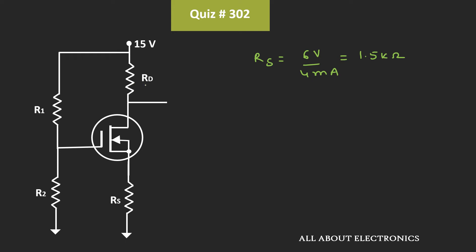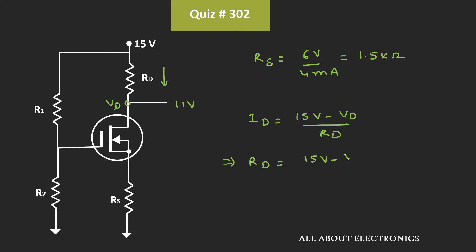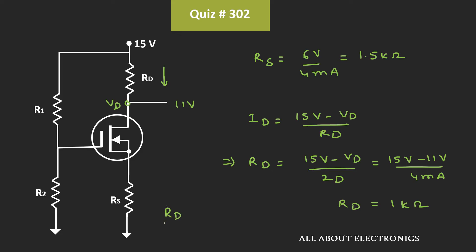Similarly, let's find the value of the drain resistor. We have been given that the drain voltage VD is equal to 11V. So the drain current ID equals (15V minus VD) divided by RD. That means RD equals (15V minus 11V) divided by 4mA, which is equal to 1kΩ. So the drain resistor RD is equal to 1kΩ, while RS is equal to 1.5kΩ. The ratio of RD to RS is equal to 1kΩ divided by 1.5kΩ, which is 0.667.